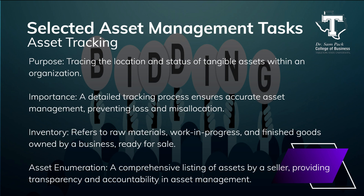Asset tracking is all about keeping tabs on where your tangible assets are located, which is crucial for managing them effectively and ensuring nothing goes missing. Inventory refers to the raw materials, work in progress, and finished goods that a business has on hand and is ready to sell — proper inventory management helps maintain stock levels and supports smooth business operations. Asset enumeration is a detailed list of all assets provided by a seller, important for keeping an organized record and helping manage and value assets accurately.